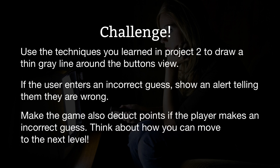And third, try making the game also deduct points if the player makes an incorrect guess. This might sound easy, but think about how you can move to the next level. We can't use a simple division remainder on the player's score anymore because they might have lost some points along the way. So either check for all the buttons being hidden, or have a second integer that counts up saying number of items matched, separate from the score.